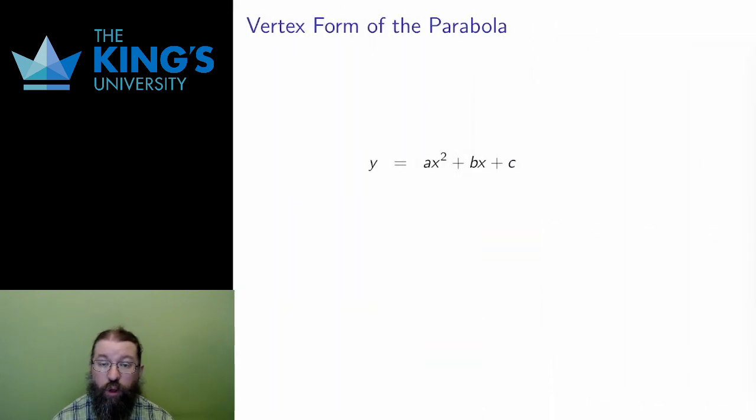The most general form of the equation of a parabola is y equals ax squared plus bx plus c. Here you can see again that this is the graph of a quadratic, f of x equals ax squared plus bx plus c.